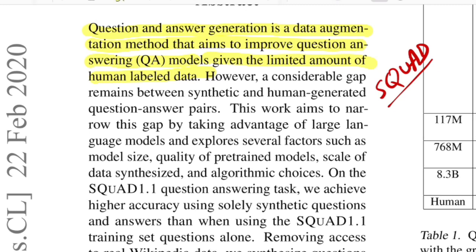When they tested for SQuAD 1.1 question answering task, they achieved higher accuracy solely with the synthetic questions that they had generated compared to SQuAD 1.1 training set questions alone that were human labeled. That's a pretty impressive result. Let's move forward and see all those three steps in the pipeline which you can use to generate these questions and answers.